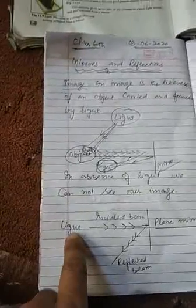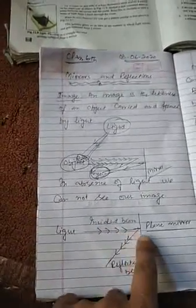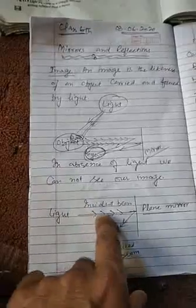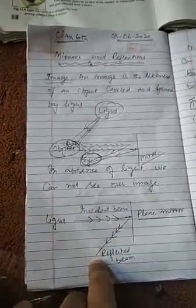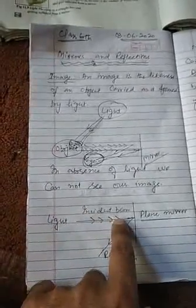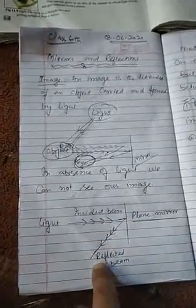What is reflection? The source of light sends a beam called the incident ray. When the incident ray hits the mirror, it produces a reflected ray. The reflected ray is the reflected beam coming back from the mirror.